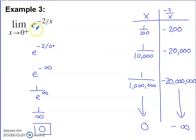So I'm going to a similar strategy. I'm going to go to a table. So what's happening with x? Well, I'm supposed to let x approach 0 from the bigger side. So I have these x's getting closer and closer to 0. 1 over 100, 1 over 10,000, 1 over 1 million. As x approaches 0, what's happening with this exponent? What's happening with negative 2 over x?